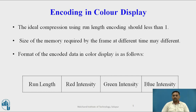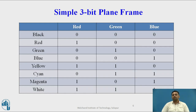The format of the encoded data in color display is as follows: the number of successive pixels holding the same characteristics, followed by the RGB values — red intensity, green intensity, and blue intensity. The combination of RGB values is stored for the number of adjacent pixels. For example, zero-zero-zero is black, one-zero-zero is red, zero-one-zero is green, zero-zero-one is blue, one-one-zero is yellow, zero-one-one is cyan, one-zero-one is magenta, and one-one-one is white. Different color images use values in this three-bit plane format.